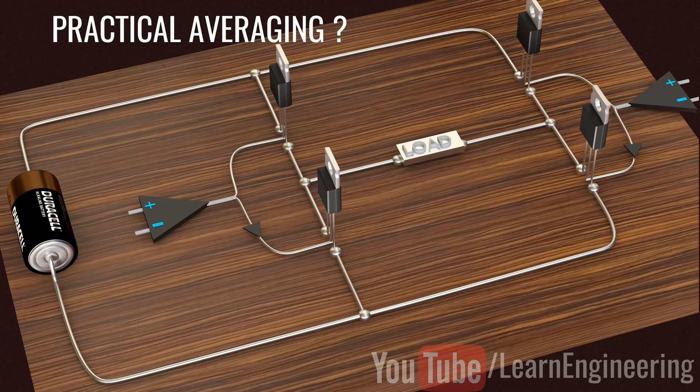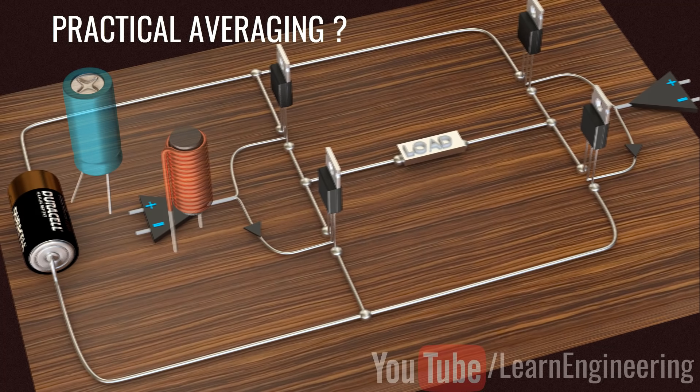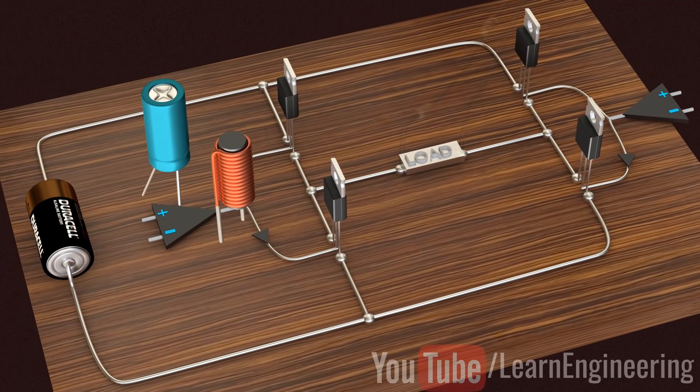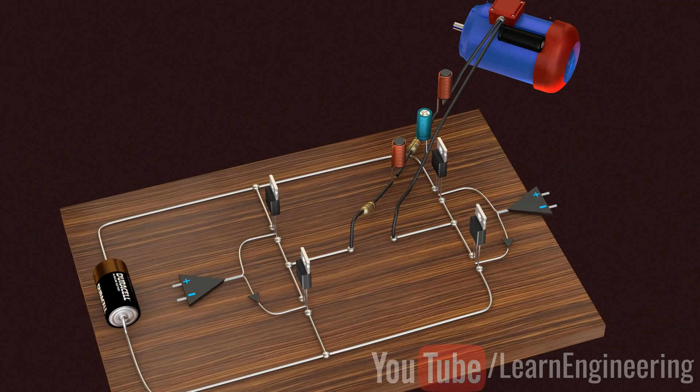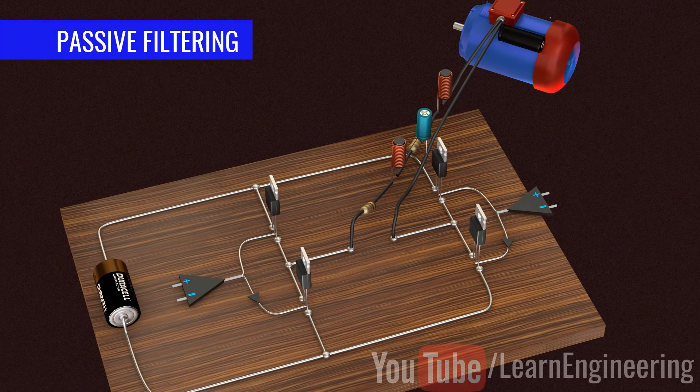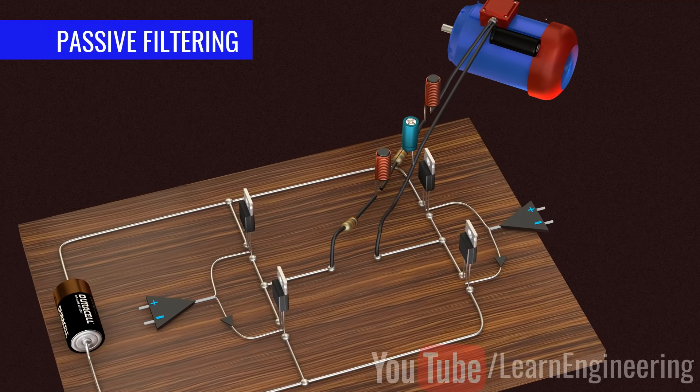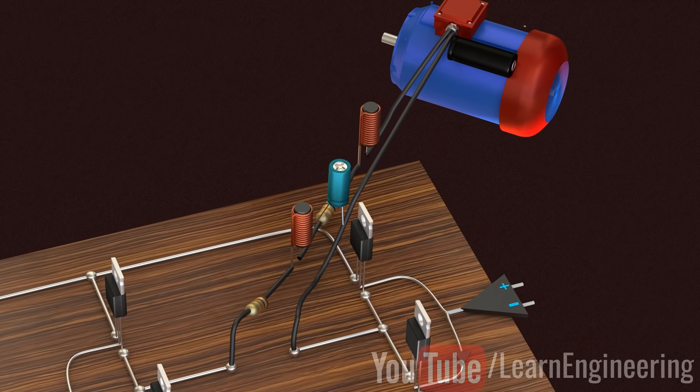To make it exactly sinusoidal, energy storage elements such as inductors and capacitors are used to smooth the power flow. They are called passive filters. Inductors are used to smoothen the current and capacitors are used to smoothen the voltage.